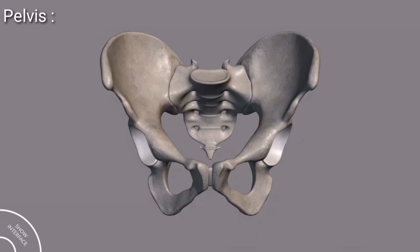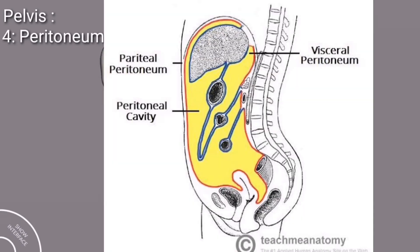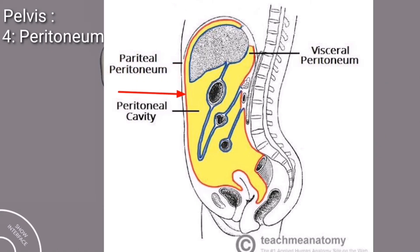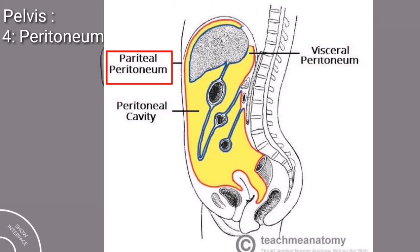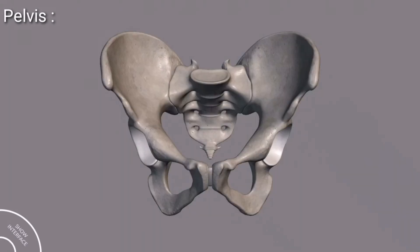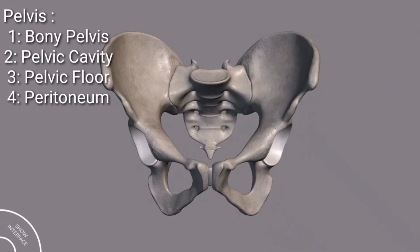The last component is the peritoneum, a continuous membrane which lines the abdominal cavity and covers the abdominal organs. When this membrane covers the abdominal cavity it is called the parietal peritoneum, and when it covers the abdominal organs it is called the visceral peritoneum. So these four — the bony pelvis, the pelvic cavity, the pelvic floor, and the peritoneum — are the major components of the pelvis.